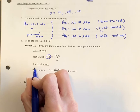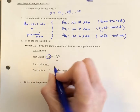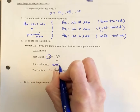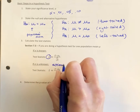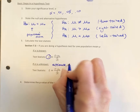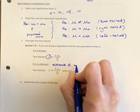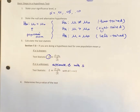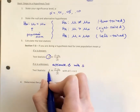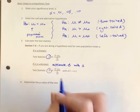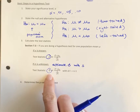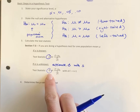If sigma, the population standard deviation, is unknown and we have to estimate it with the sample standard deviation s, then we're going to switch to what's called a t-distribution. We haven't learned that yet, so we'll explain that in the next video.